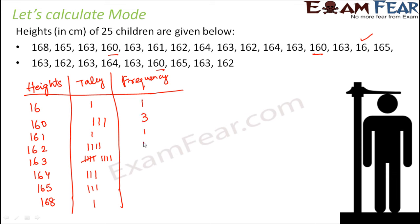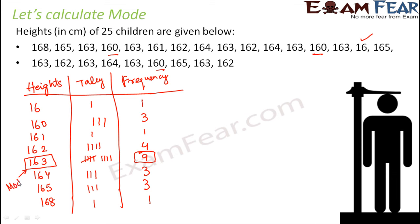The frequencies are: 1, 3, 1, 4, 9, 3, 3, 1. This is how we prepare the frequency distribution table. Now we find the mode: it corresponds to the data with the maximum frequency. The maximum frequency is 9, and the data corresponding to it is 163. Therefore, the mode is 163.